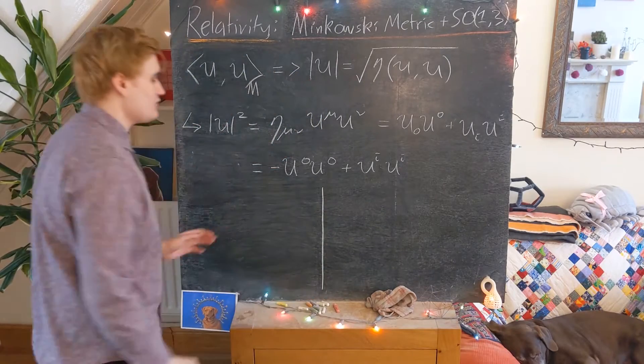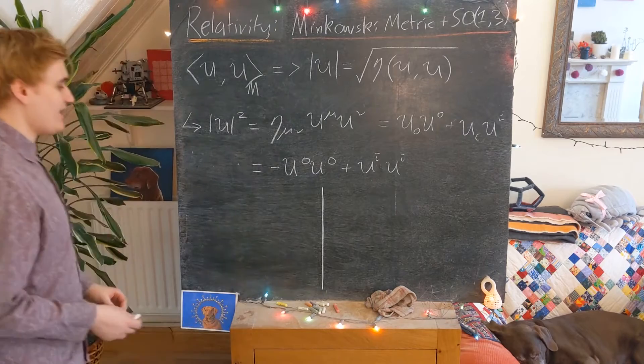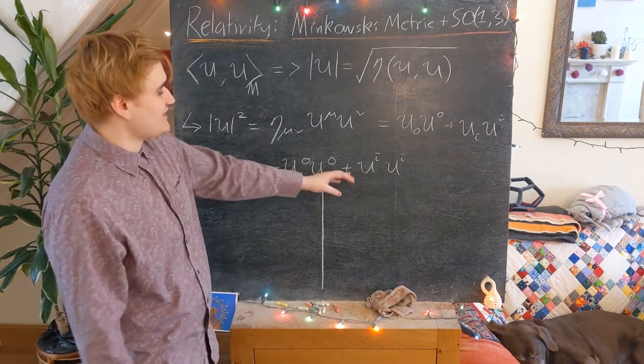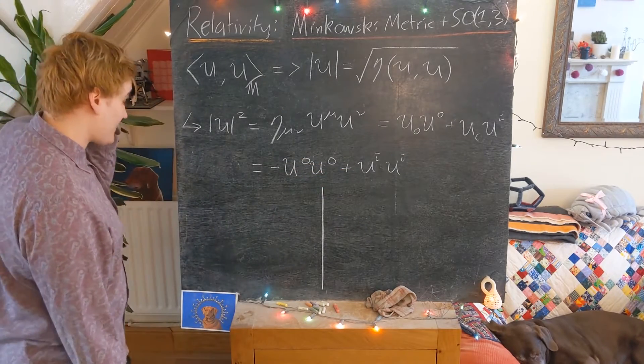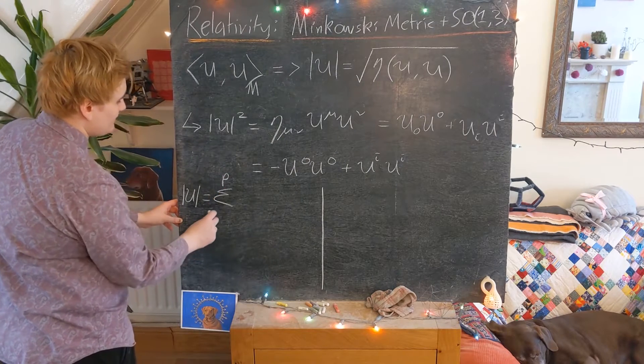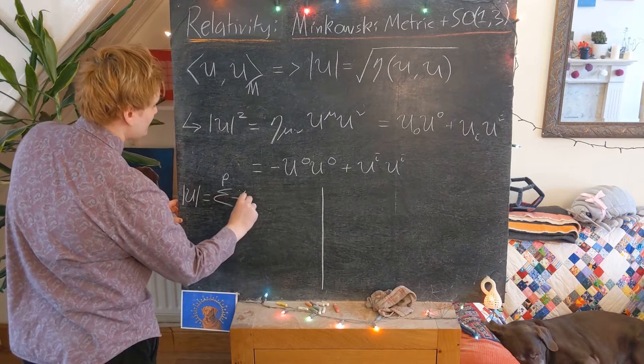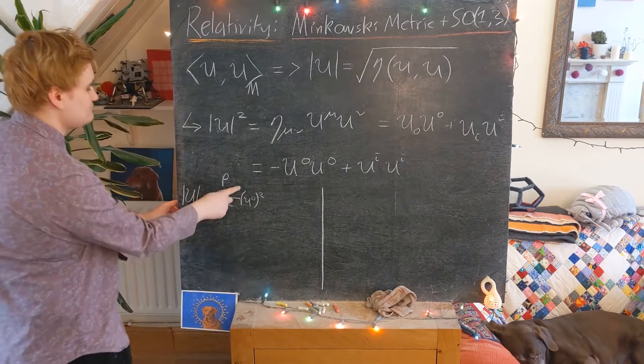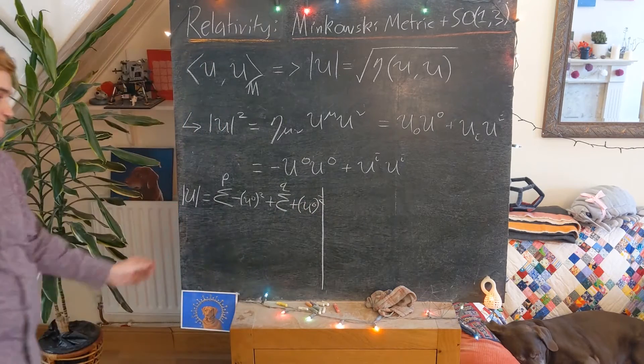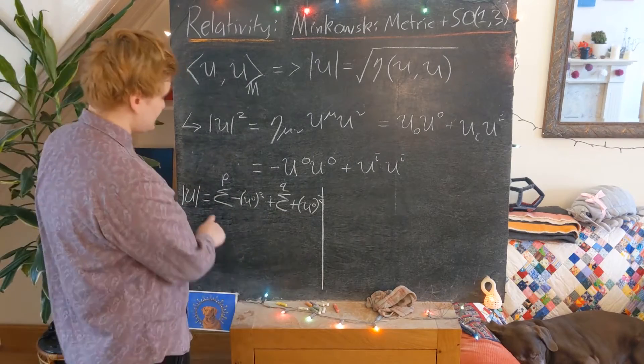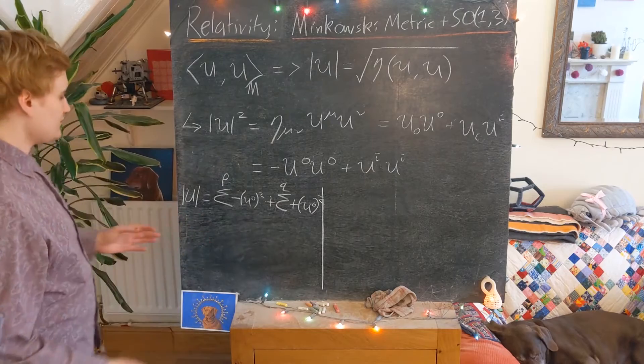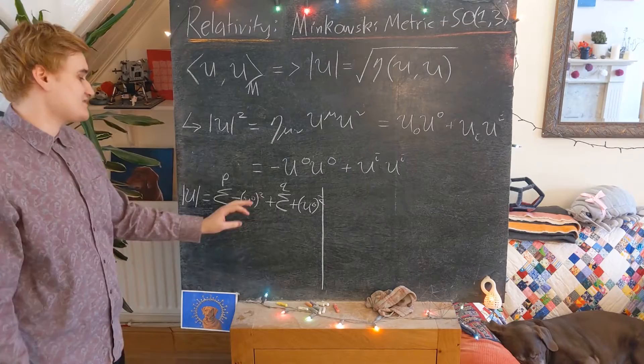So one way to kind of view a norm of this form is now in the following way. We're saying that we take the vector components and then we square the components and then we add them together with either a negative or positive coefficient. And so if you like, we can express the distance formula as now a sum up to some number p of a negative quantity squared plus some amount q of a positive quantity squared. And now this thing, just some kind of sum of some squared things, is what we would sometimes refer to as a quadratic form.